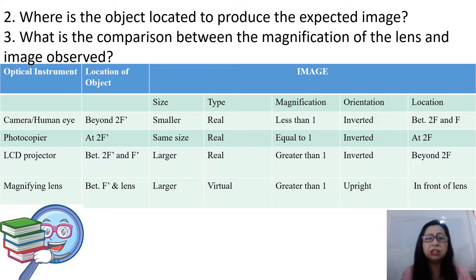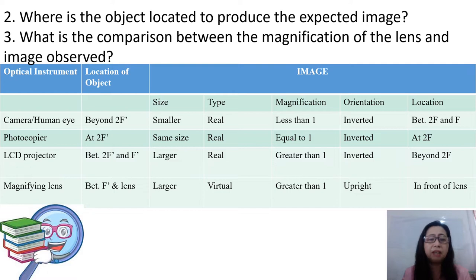Where is the object located to produce the expected image? For the camera and the human eye, the object should be placed beyond or farther than 2F'. For the photocopier, at 2F'. For the LCD projector, between 2F' and F'. For the magnifying lens, between F' and the lens.